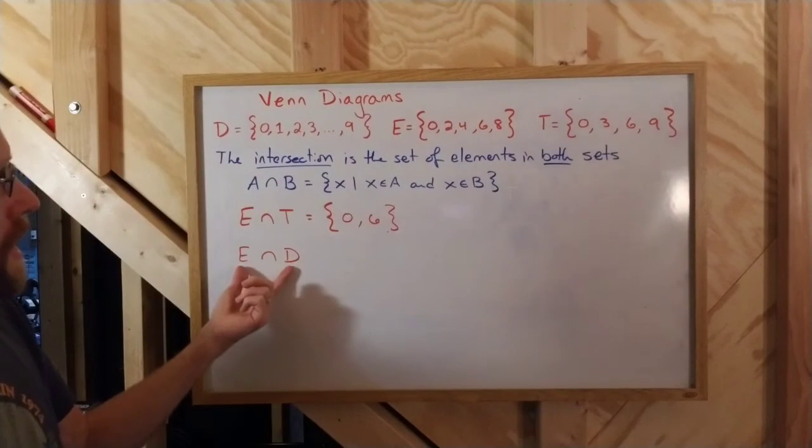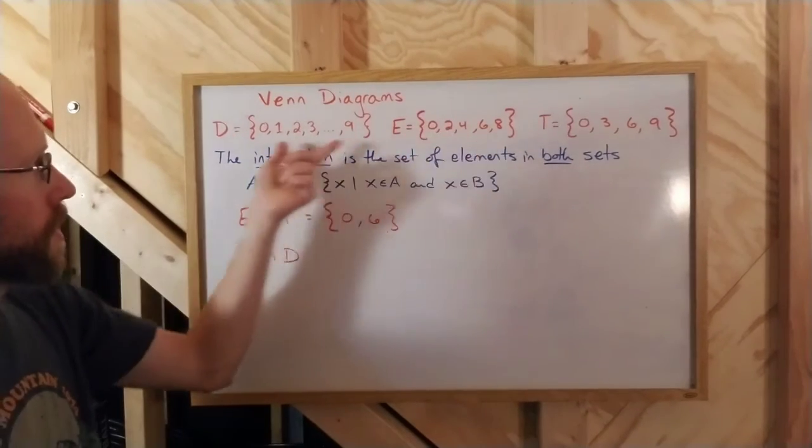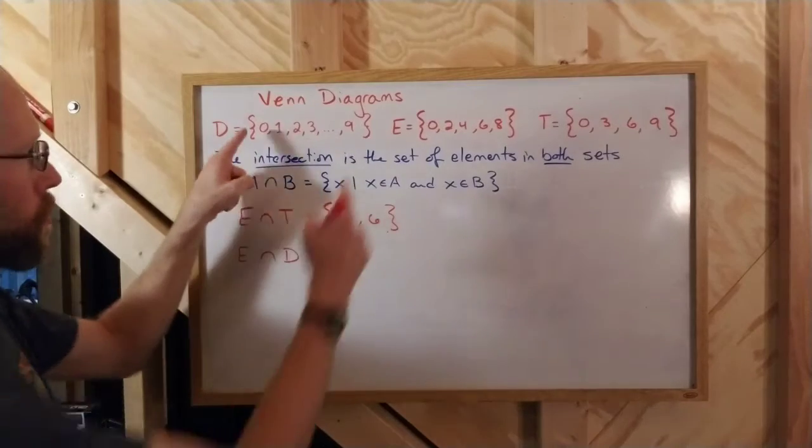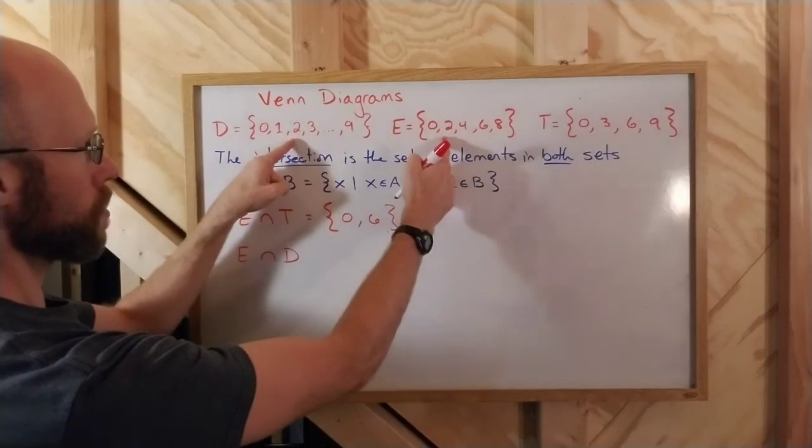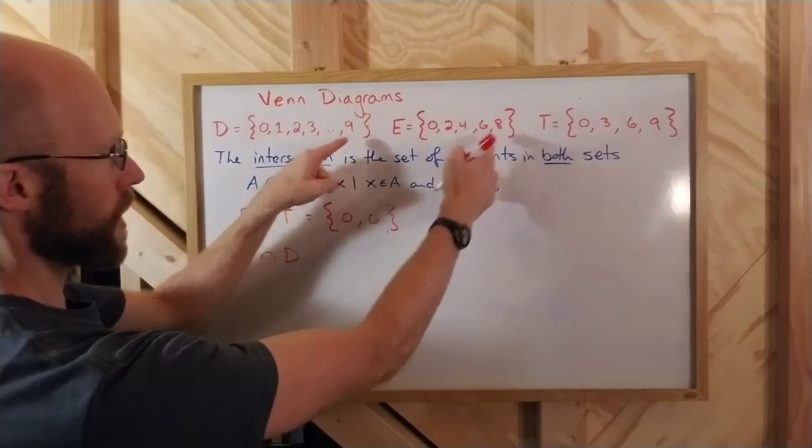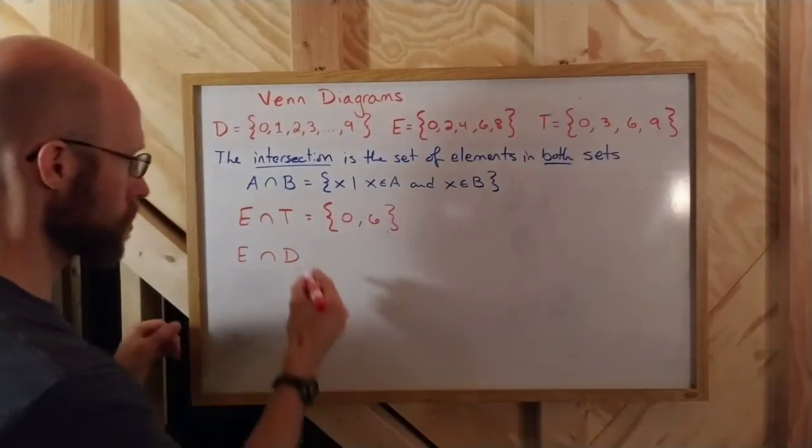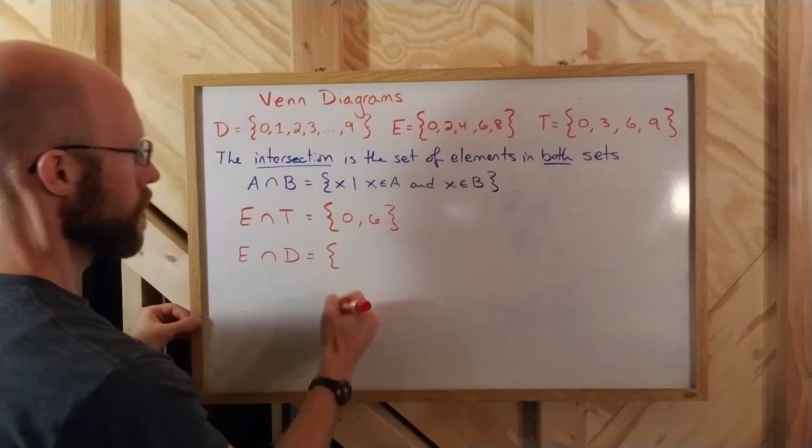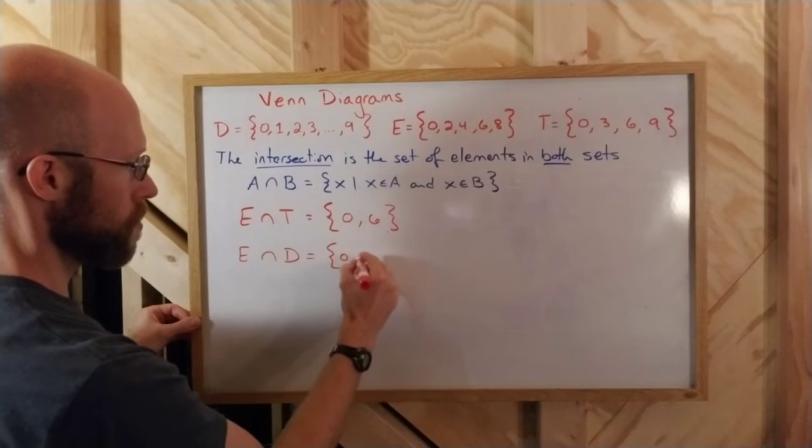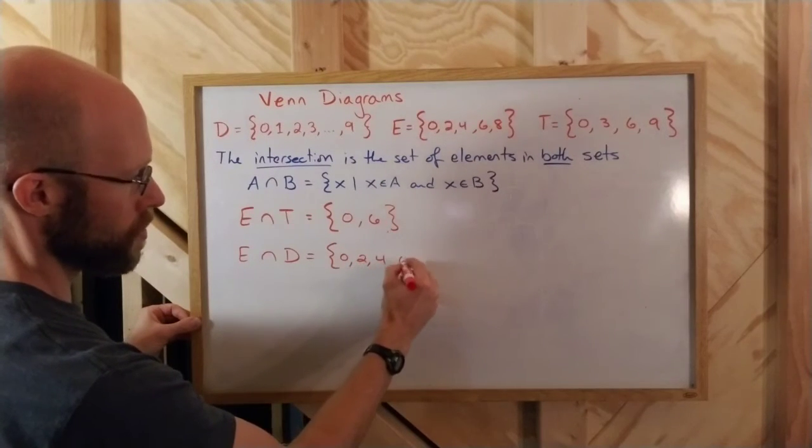E intersected with D. If I look at this set and this set, what elements are in both? Well, 0 is in both, 2 is in both, 4 is in both, 6 and 8. All of the elements in E are in both. And so if I wrote that out, the intersection is, of course, 0, 2, 4, 6, and 8.